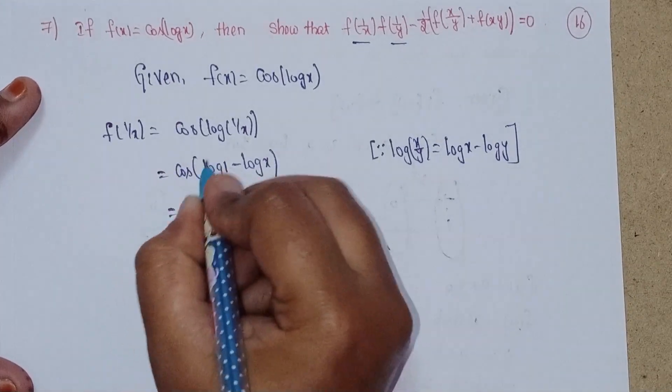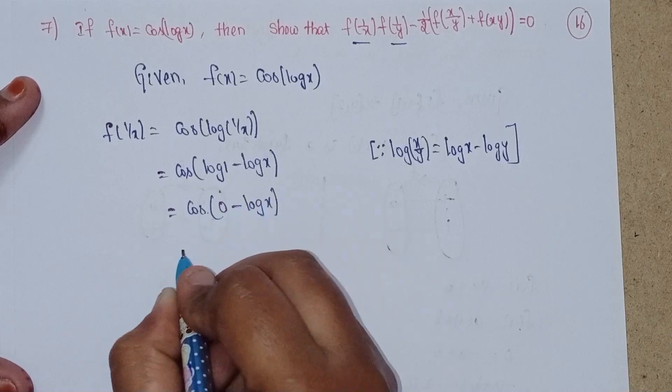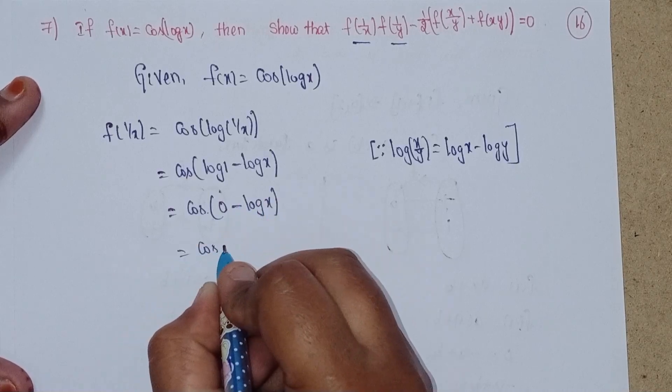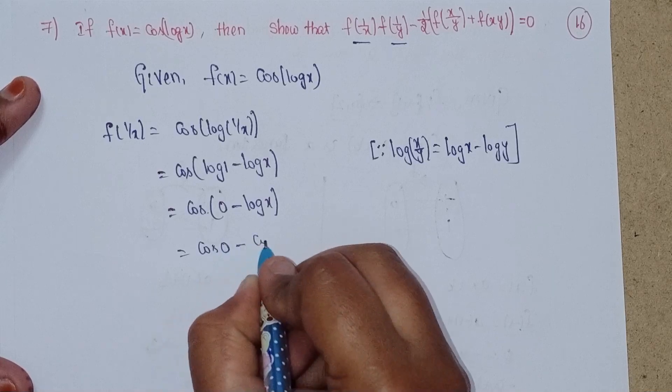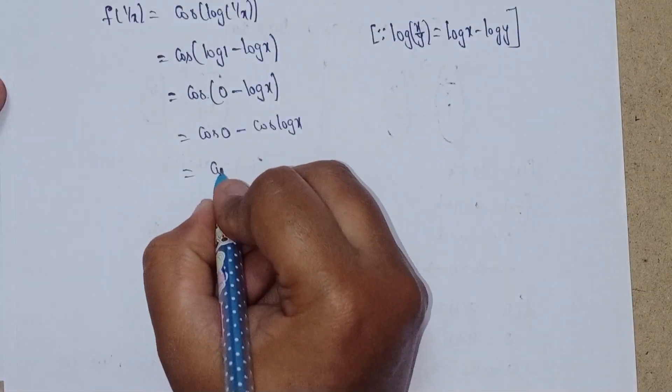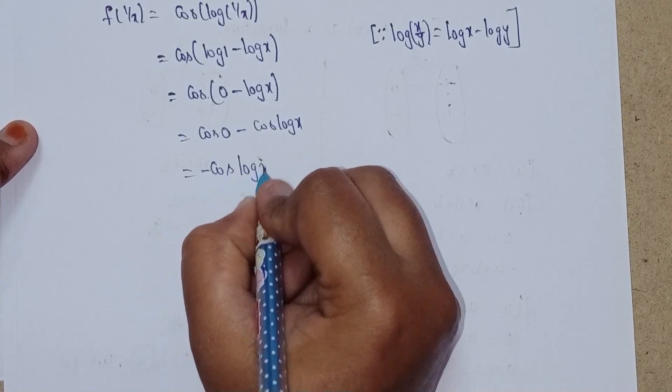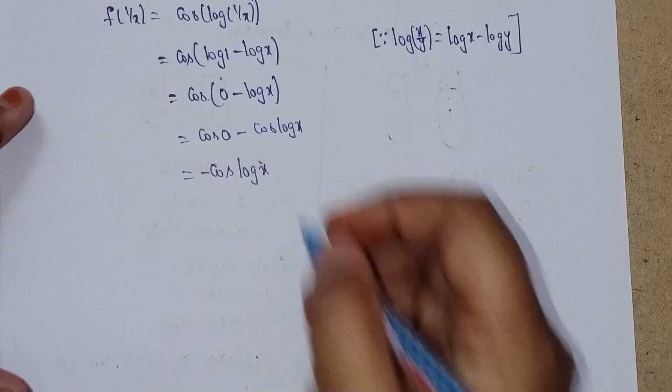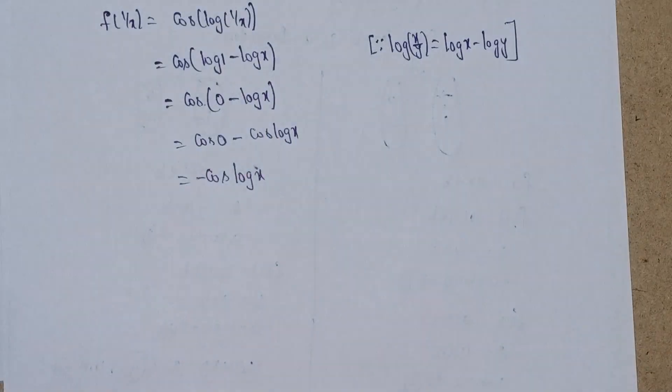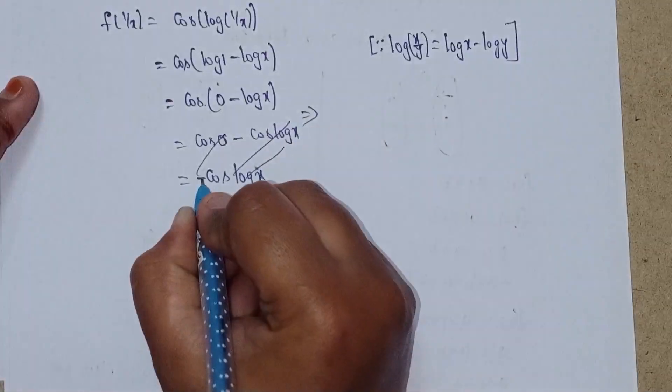This becomes cos(log 1 - log x) = cos(0 - log x) = cos(-log x). Since cos(-θ) = cos(θ), we get f(1/x) = cos(log x).